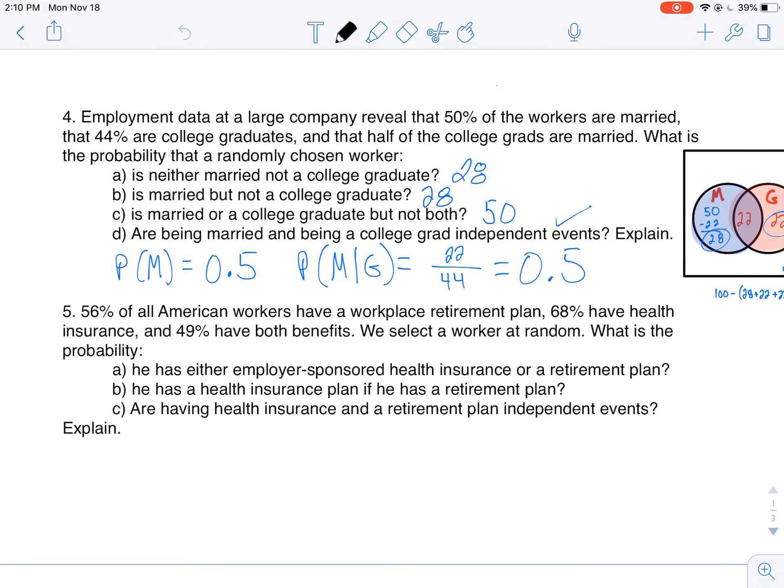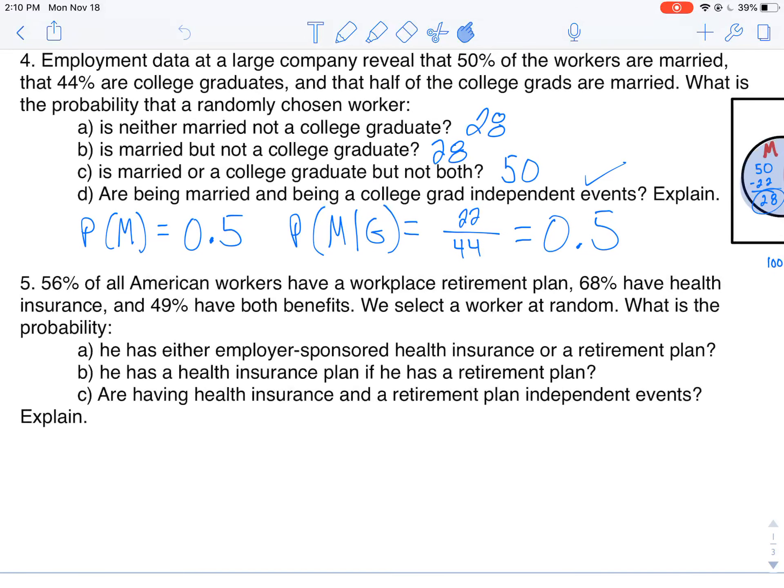All right, I'm gonna be rocking another probability problem. So let's see, 56% of all American workers have a workplace retirement plan, 68% have health insurance, and 49% have both. We're gonna select a worker at random and we want to find the probabilities.